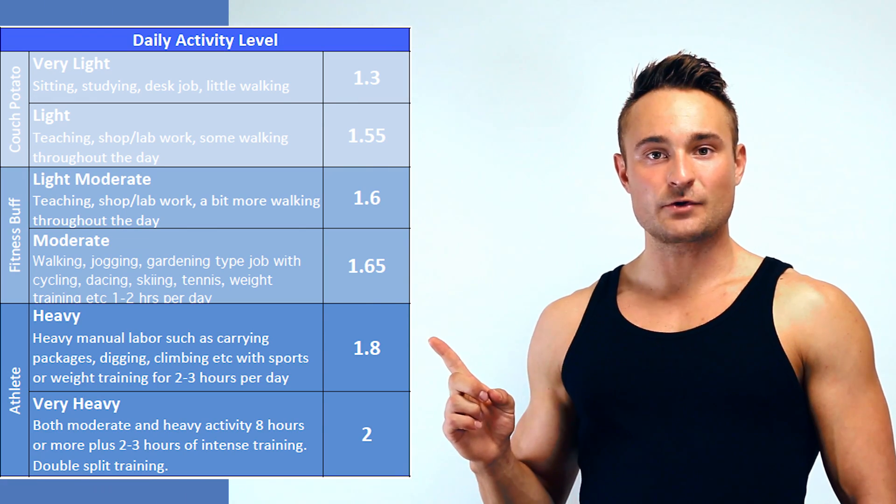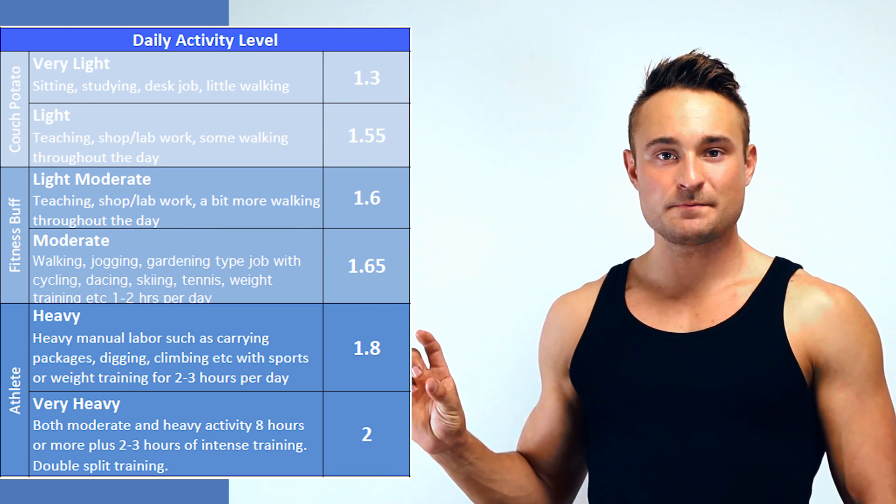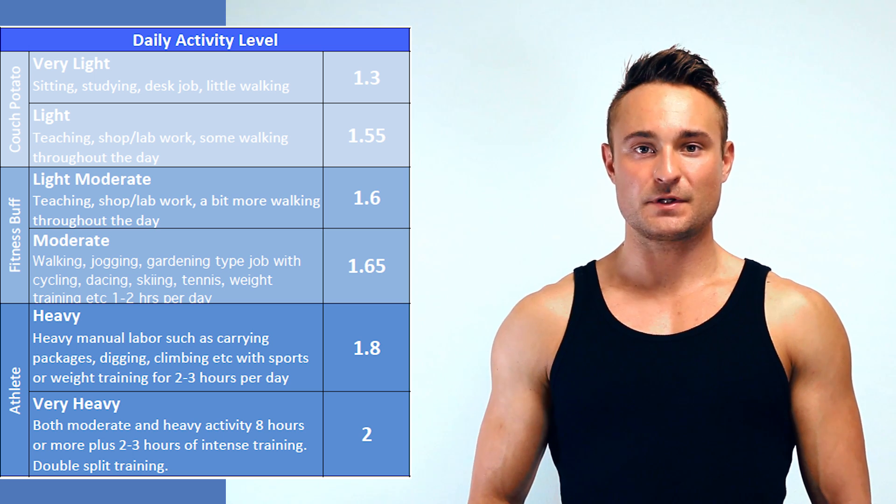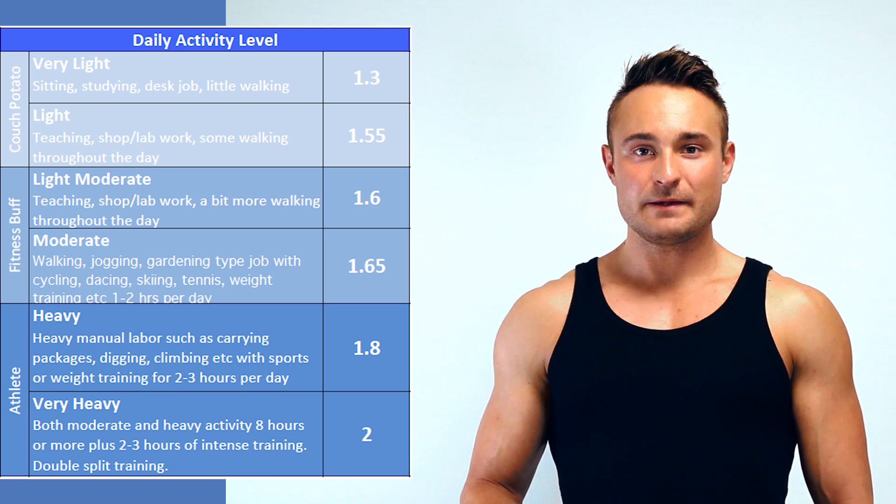Take a look at this chart and find your activity level and the corresponding multiplier. Let's assume our 91-kilo male is a couch potato. In his case, we multiply his BMR of 2,075 by 1.3, and we get 2,700 kilocalories. This is his total daily energy expenditure, or TDEE.